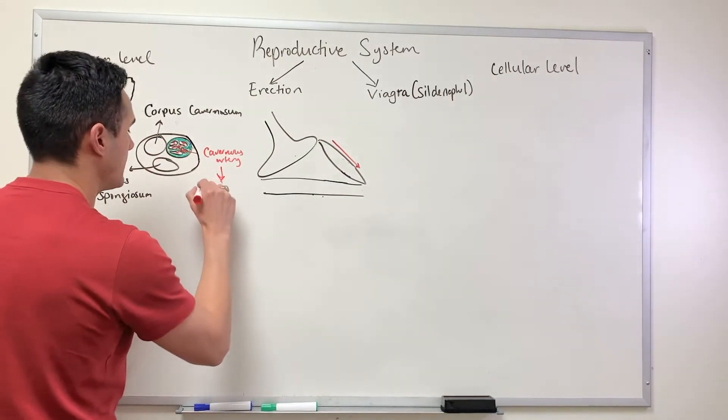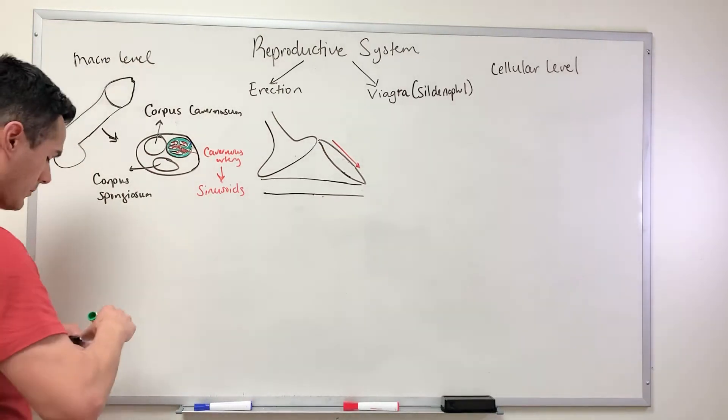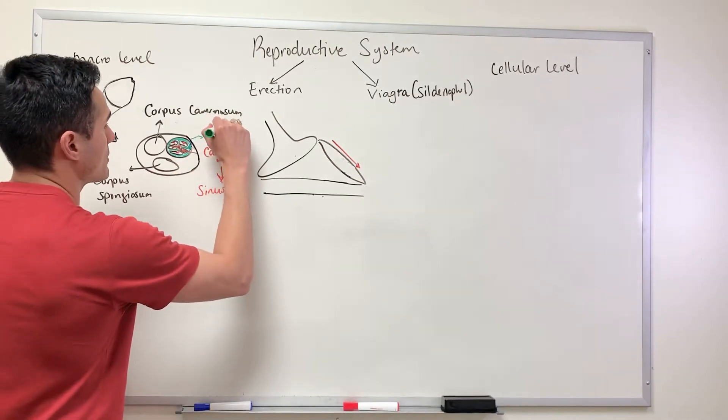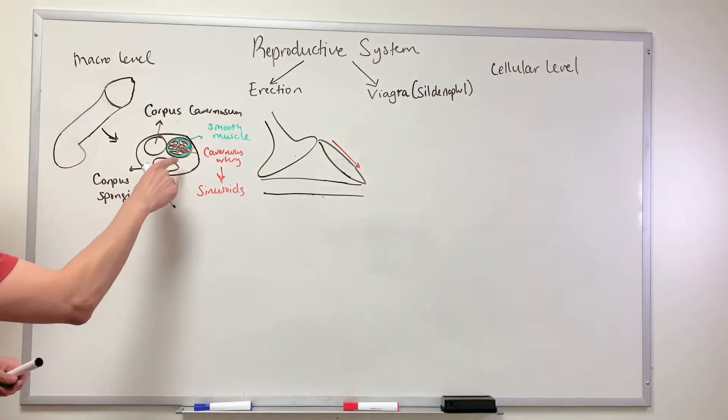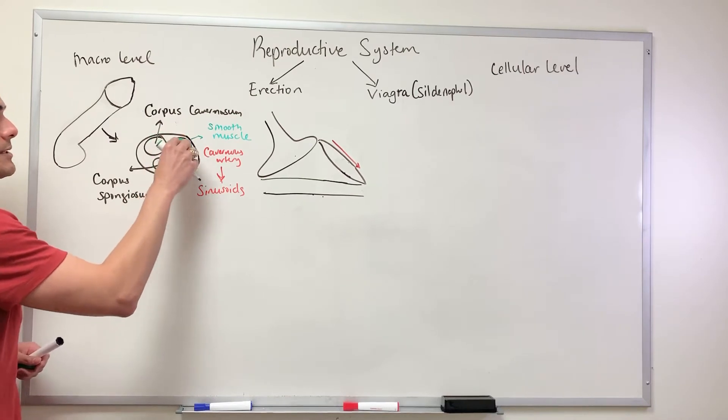This part here in green is the smooth muscle, more specifically the trabecular smooth muscle. As blood is filling in here into these sinusoids, this smooth muscle has to relax.